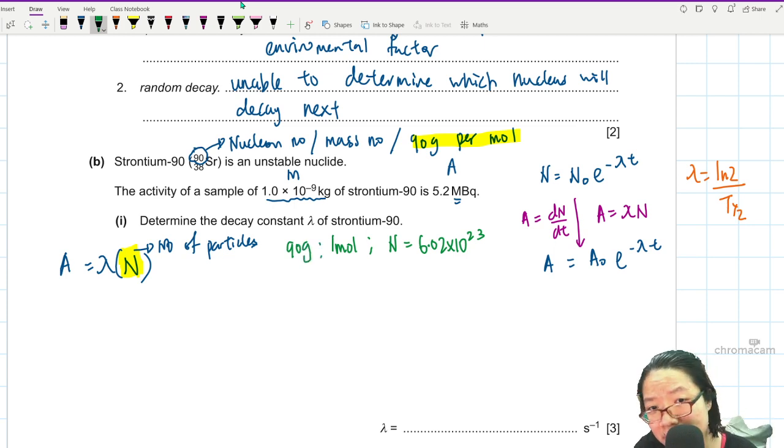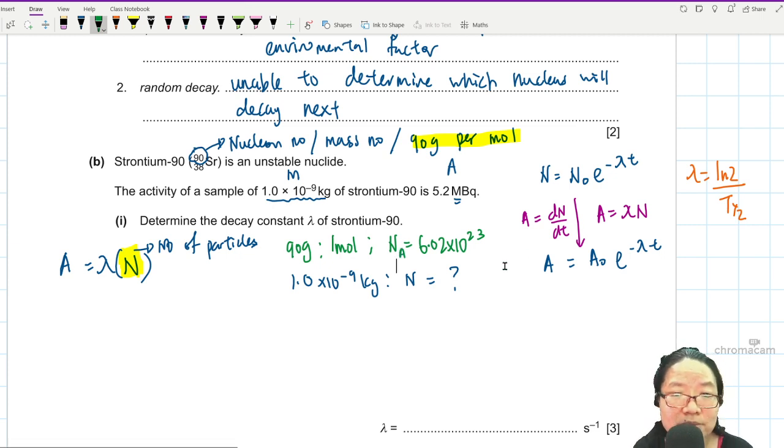And this is 90 gram. So if 90 gram is 6.02 times 10 to the power of 23, then this many gram, now my m is 1.0 times 10 to the power of negative 9 kg, this N is equal to what? This is your mole concept. Using ratio. 90 gram, so many particles. This much mass, how many particles? So we use ratio. You know what? We do that lah.